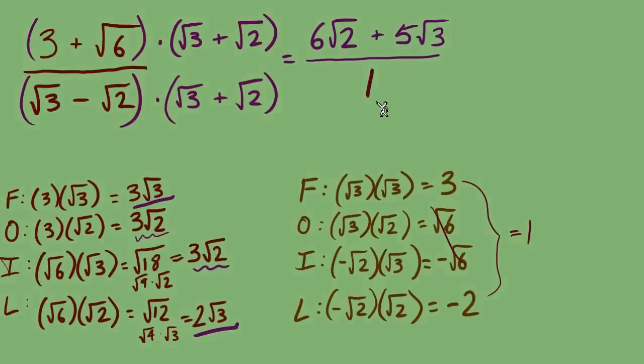What would you like to do with this fraction over 1? Well, I'd like to cut that over 1 loose and just hold on to the numerator: 6 radical 2 plus 5 radical 3. Now there's no fraction anymore, so definitely that part is finished.